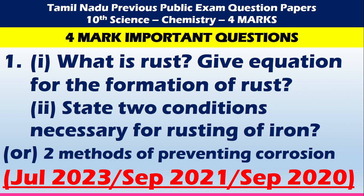The first important 4-mark question for chemistry is: What is rust? Give an example for the formation of rust. State two conditions necessary for rusting of iron, or two methods of preventing corrosion. This question has been asked almost three times in your examination, my dear children. Please make note of that.